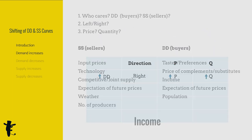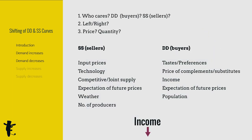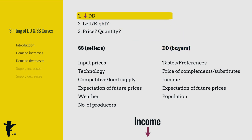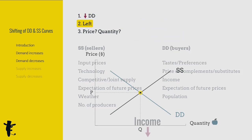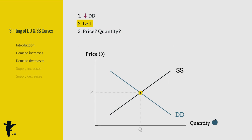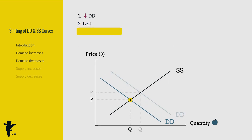When income drops, demand decreases. The demand curve shifts left. Price decreases. Quantity decreases.